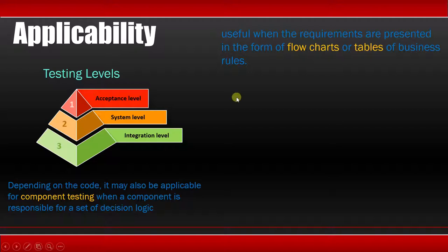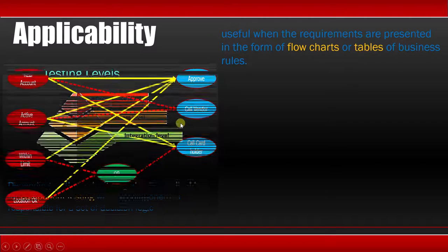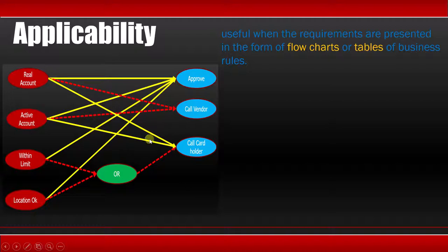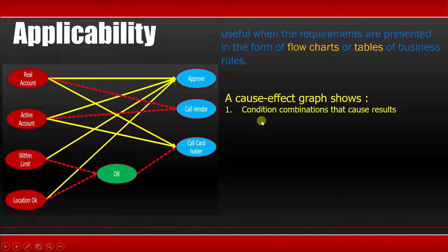Now let's see some basic points regarding the cause-effect graph which we have drawn. So a cause-effect graph shows: First thing is condition combinations that cause results. So here you can see that there are different conditions, when they were fulfilled, we were achieving this result. That is approved transaction.